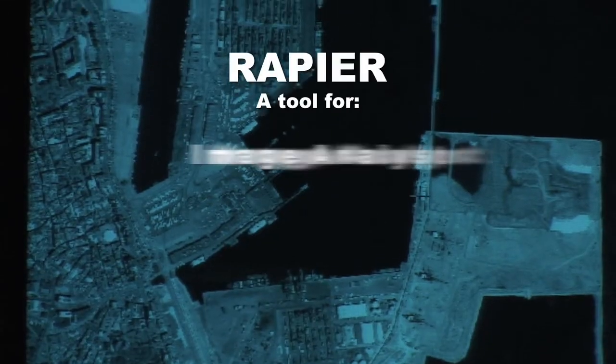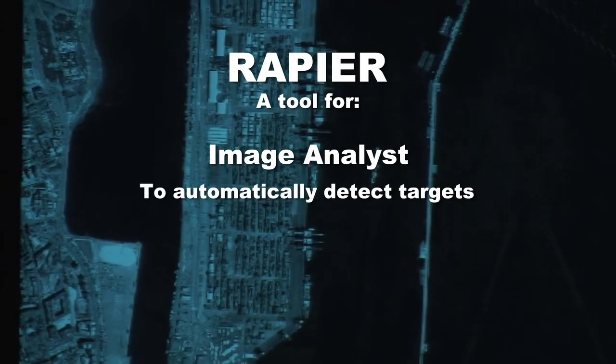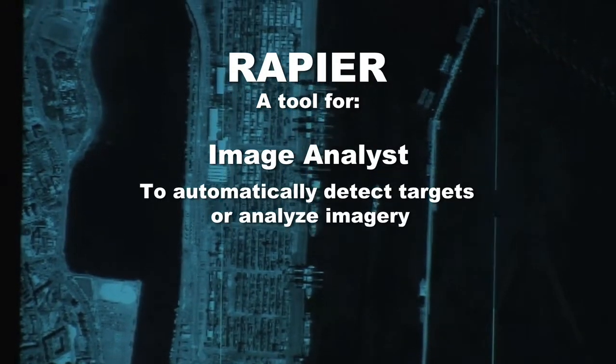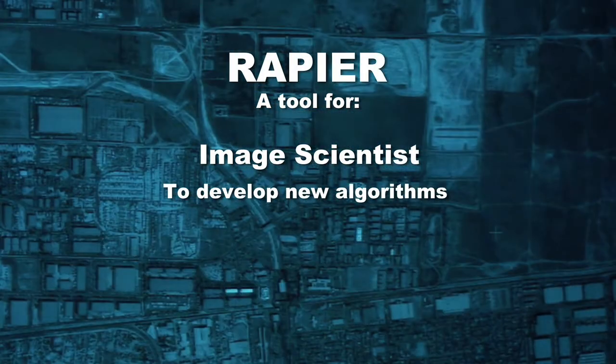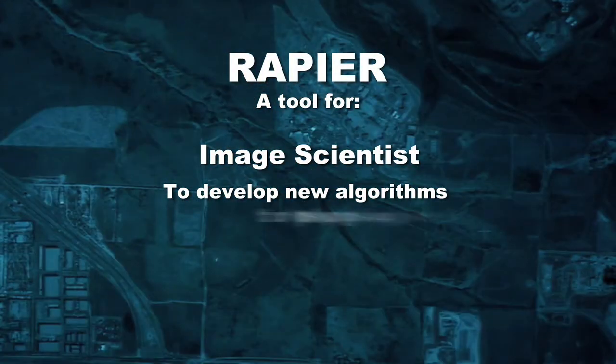Rapier is a framework for processing satellite imagery, both commercial and national. It's a tool for the image analyst to look for targets of interest or analyze their imagery, and also a tool for the image scientist to develop new image processing algorithms to plug into Rapier.